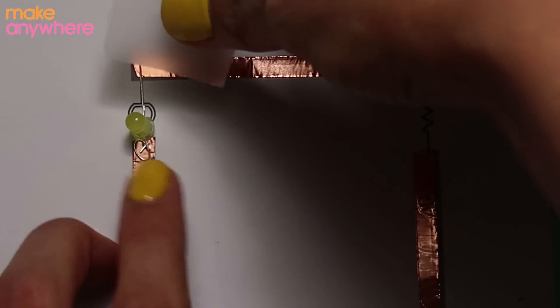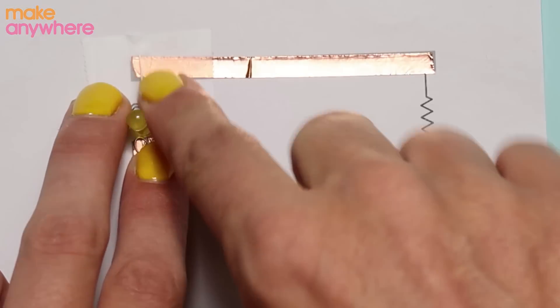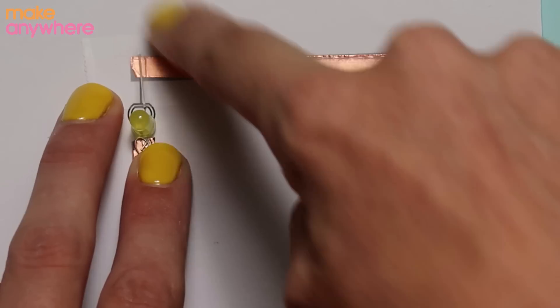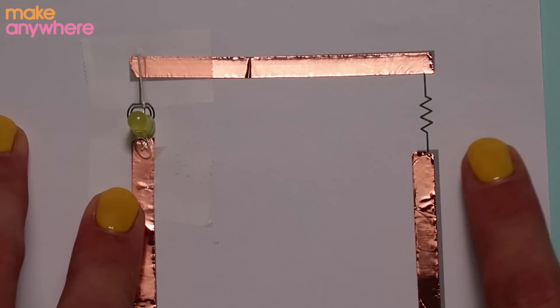Now take your tape and tape over the top, making sure that that leg is pushed down onto the copper tape onto the shiny side. Do the same on the other side and then do the same for your resistor.